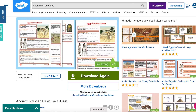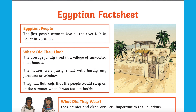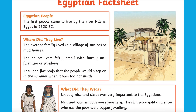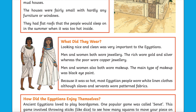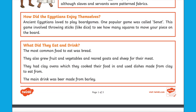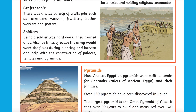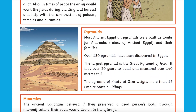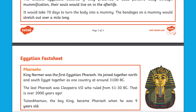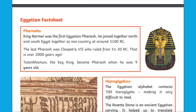If you're looking for a research task on this topic, the Ancient Egypt Basic Fact Sheet is a great resource to help your children with their research. Children can use these fact sheets alongside researching online, and it would be a great resource for finding information for a non-chronological report based around Ancient Egypt.